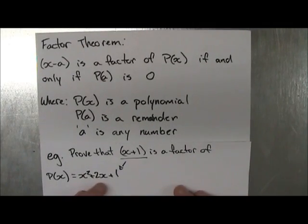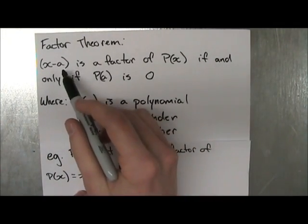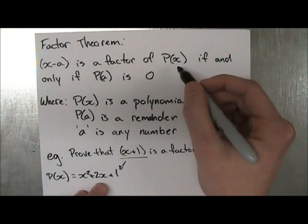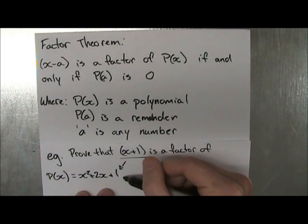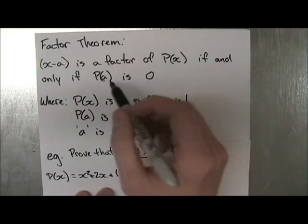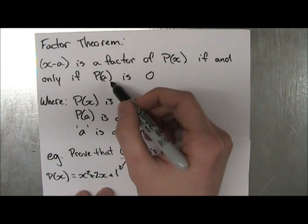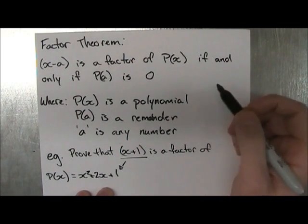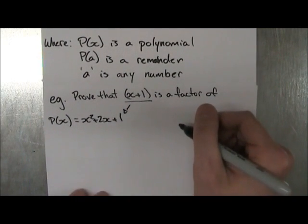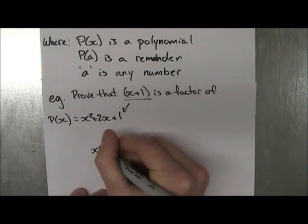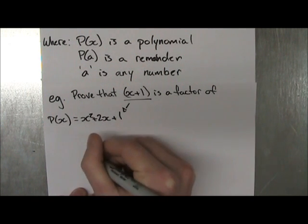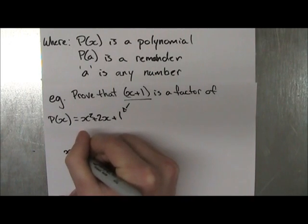Okay, well if we go back to our theorem, it says that x minus a, which in our case is x plus 1, is the factor of P(x), and this is our P(x) here, is a factor if and only if P(a) is 0, and P(a) is a remainder. So to find the remainder of this, you have to do our polynomial divided by x plus 1, right?